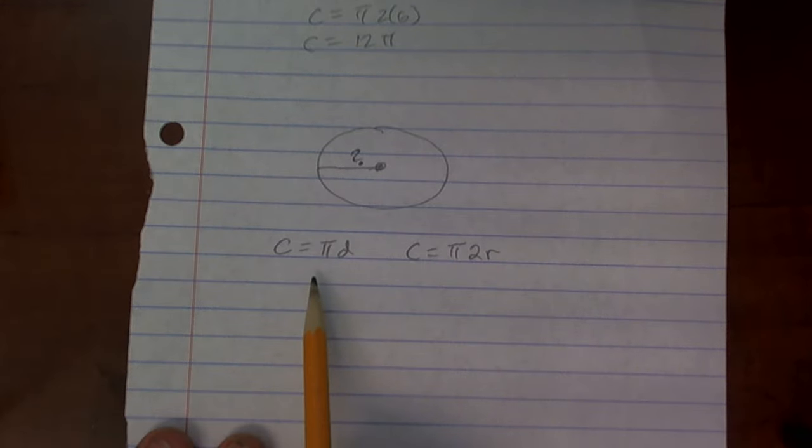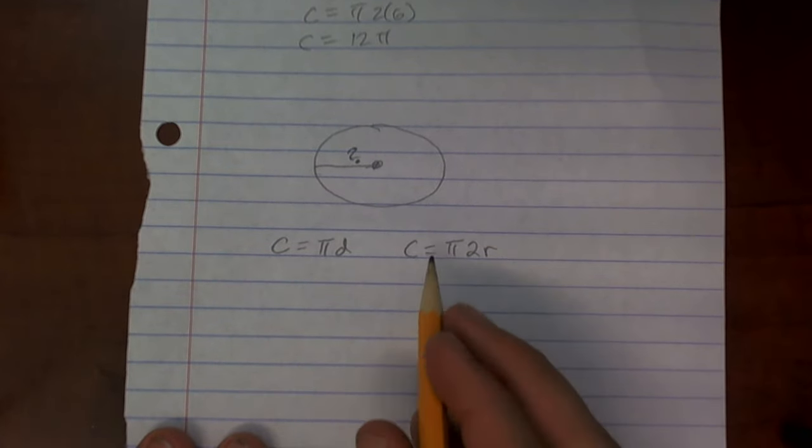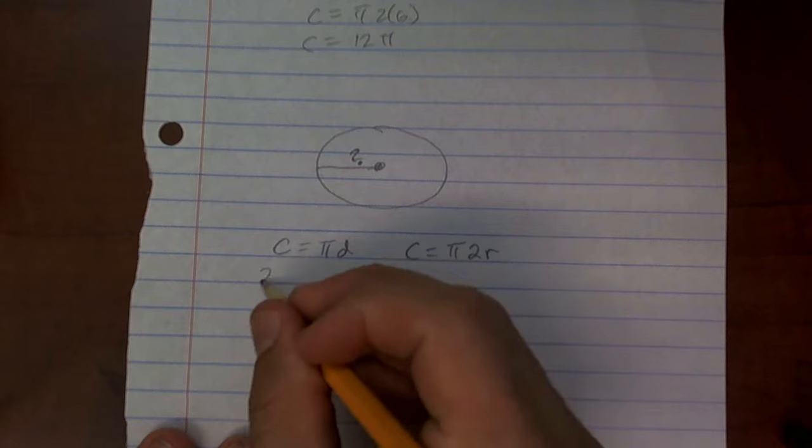And do they tell us what their circumference is? It's 24 times pi. Right, so it's 24 times pi. So what I can do is I can just plug in 24 pi in for c.